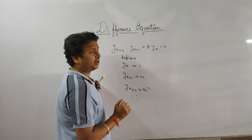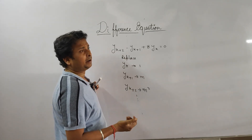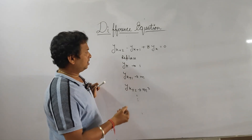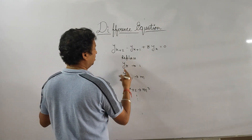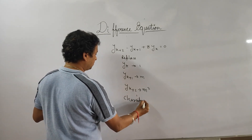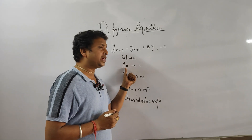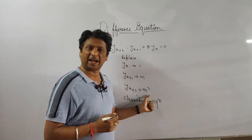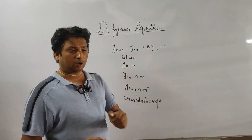In differential equations, to write the auxiliary equation, we put 1 in place of y, m in place of dy/dx, and m² in place of d²y/dx². Similarly here, to write the characteristic equation, we replace y_k by 1, y_k+1 by m, y_k+2 by m², y_k+3 by m³, and so on.